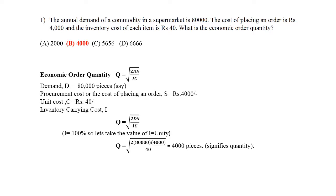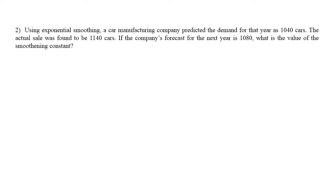The next question, which also appeared in the IES exam, is regarding the exponential smoothing method. It says: using the exponential smoothing method, a car manufacturing company predicted the demand for that year as 1,040 cars. The actual sale was found to be 1,140 cars. If the company's forecast for the next year is 1,080, what is the value of the smoothing constant? The predicted demand is basically forecasting — the company forecast 1,040 cars but the actual sale was 1,140, showing a difference between forecasted and actual sale.